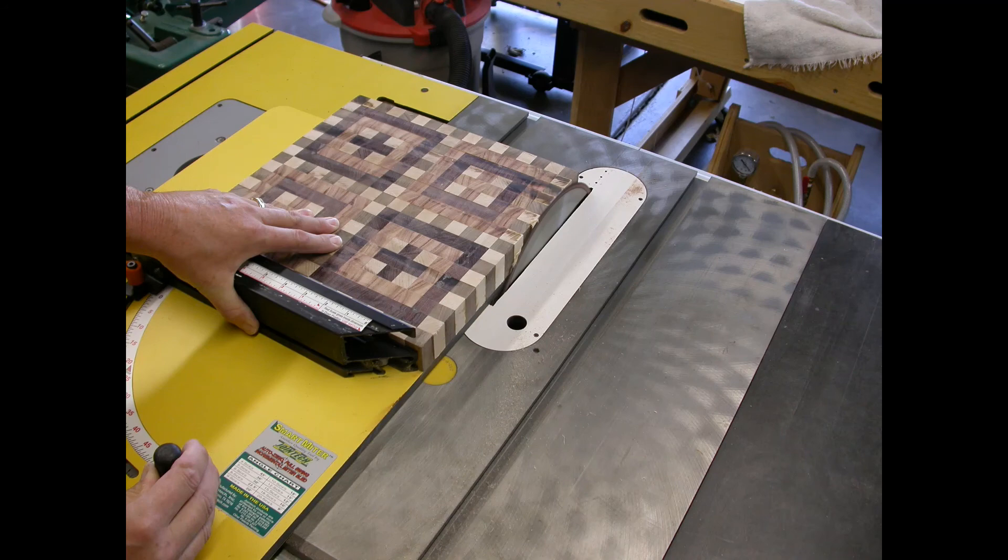Next trim the edges of the board at the table saw to make things even. Trim only as much as you need to and trim equal amounts from each side to keep the pattern even.